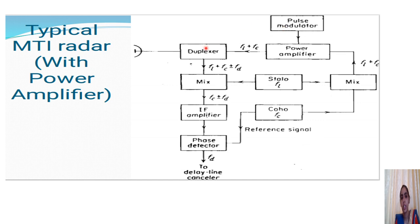The basic difference here is how the reference signal is generated. In the earlier simple format, the reference signal was taken from a portion of the transmitter to the receiver side. But here the reference signal is produced by a coherent oscillator, whose frequency is denoted as FC. In addition, a stable local oscillator is also employed, with its frequency denoted as FL.